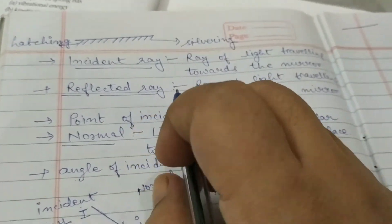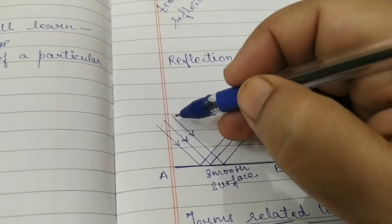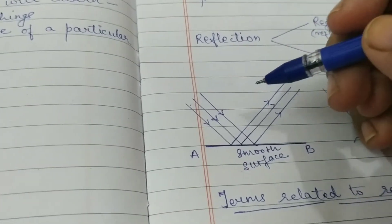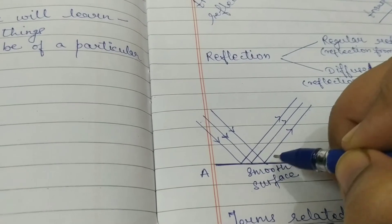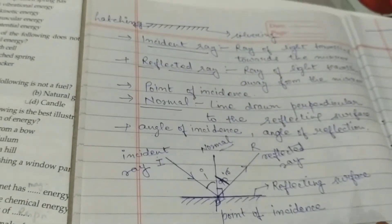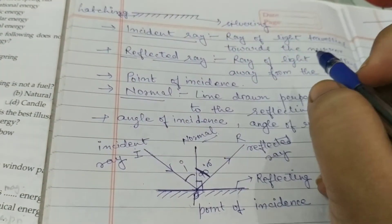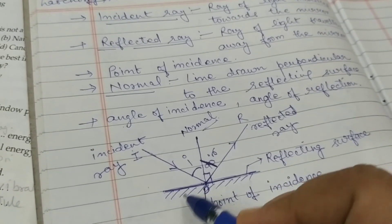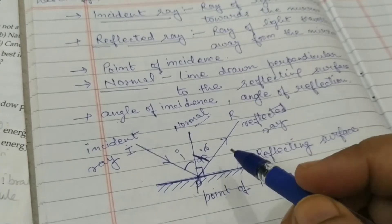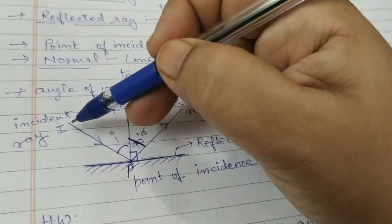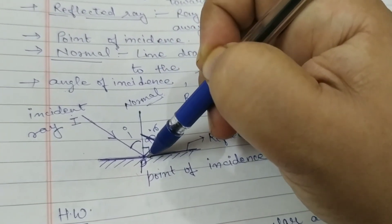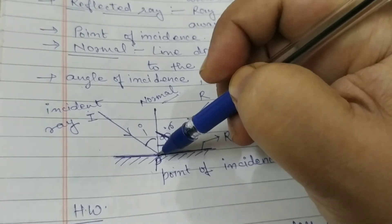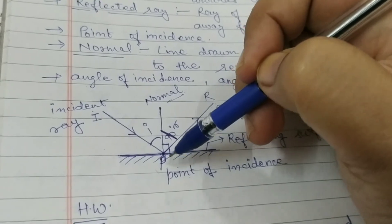The light ray coming towards the reflecting surface is called the incident ray, denoted by I. The point at which it touches the reflecting surface is called the point of incidence, denoted by P. The ray going away from the surface after reflection is the reflected ray. If we draw a perpendicular to the reflecting surface at the point of incidence, that perpendicular is called the normal.